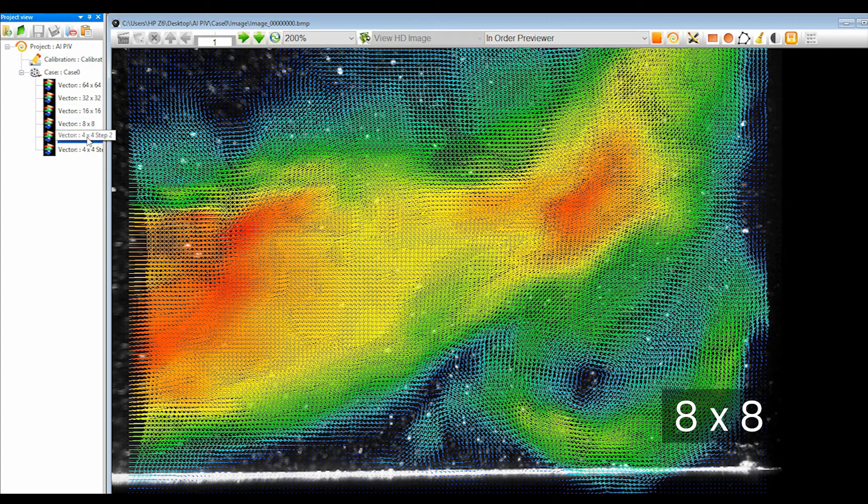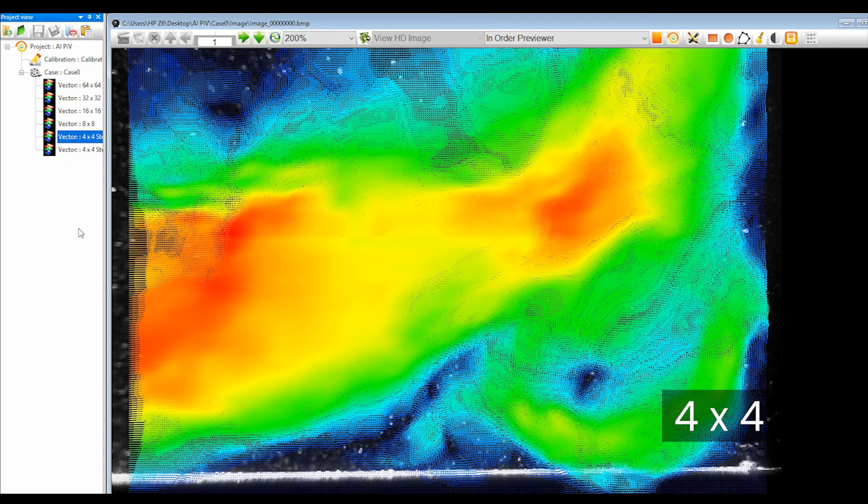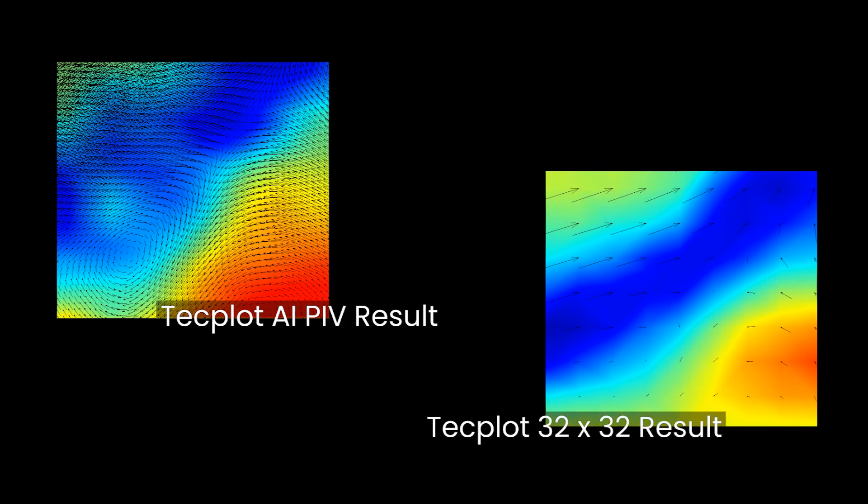The example shows the results of AI PIV with down to one vector per 4x4 pixels. These results are smoother and show a new level of detail. A small vortex structure can be detected which was previously invisible to traditional PIV software. The accuracy of both velocity and velocity gradient is significantly improved.